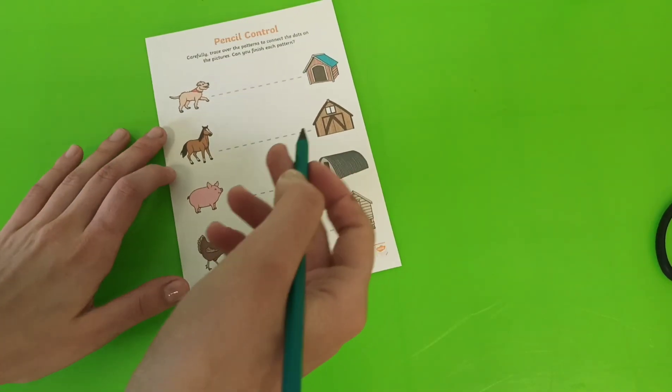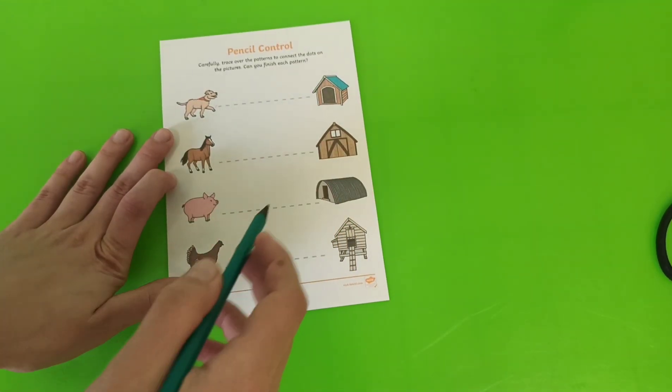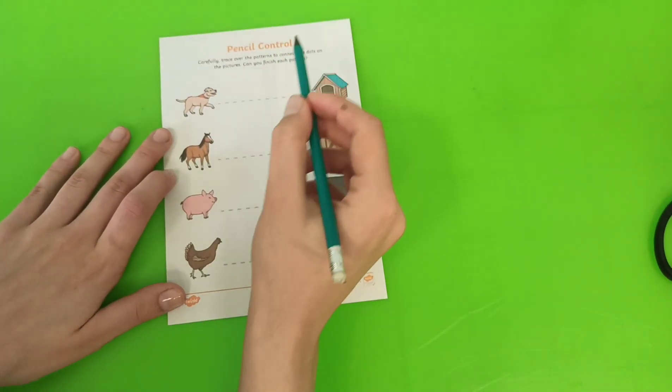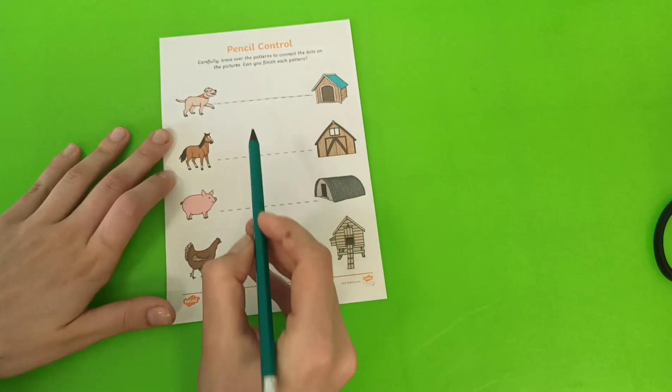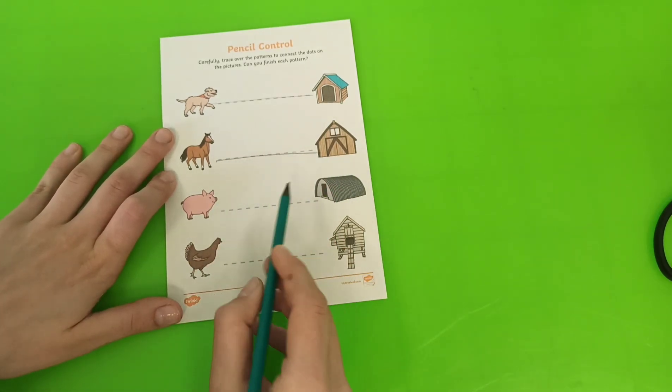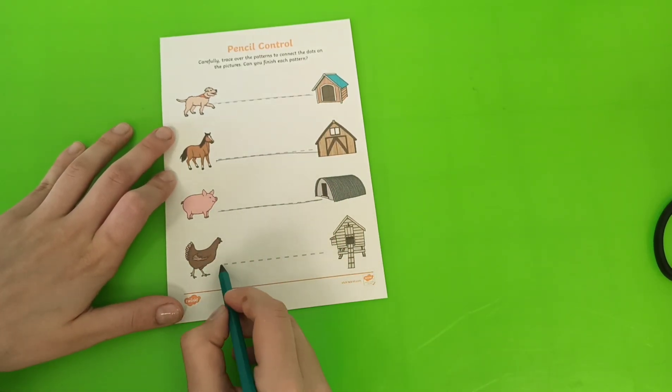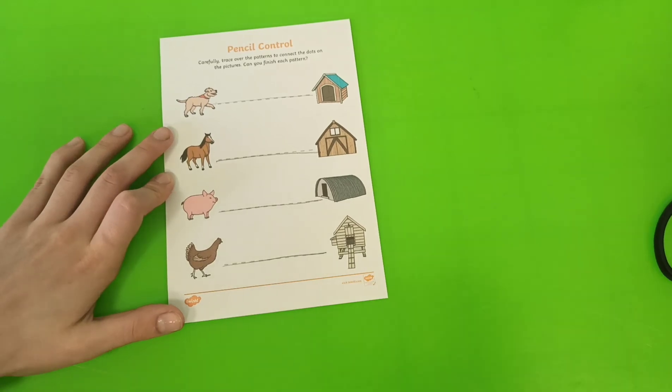Here we have a pencil control. Carefully trace over the patterns to connect the dots on the picture. Well done. Well done.